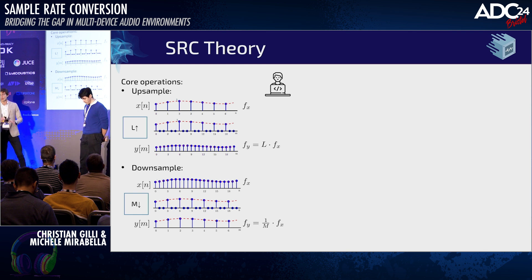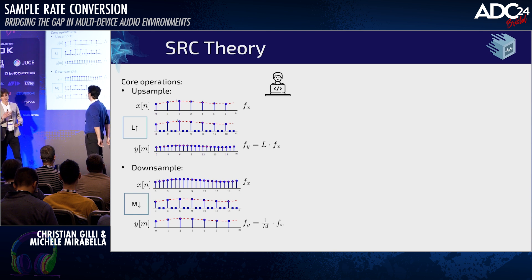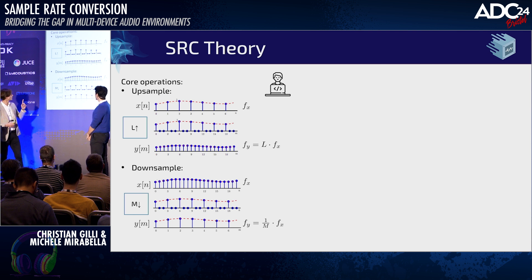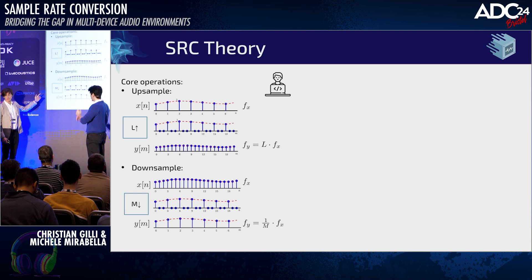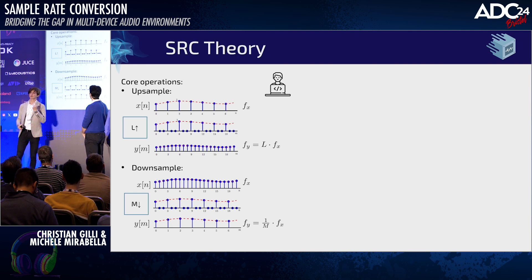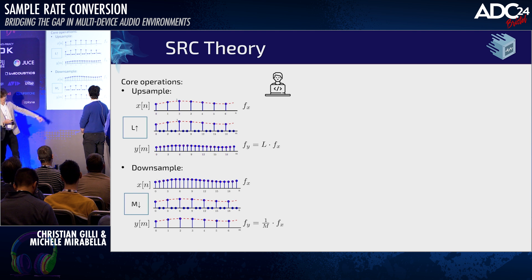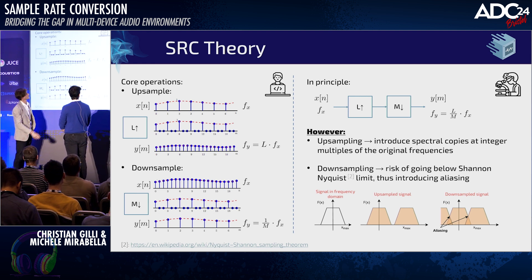The first is upsampling: the process of artificially introducing a higher number of samples in your signal. A factor-L upsampling introduces L adjacent new samples between two existing ones, so that the final sample rate is increased by a factor of L. On the other hand, the second core process is downsampling: factor-M downsampling means you keep one sample out of every M, so your final sample rate is reduced by integer factor M. If we combine the two operations, what you get is a factor L/M conversion in sample rate.